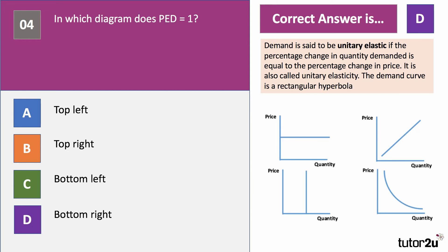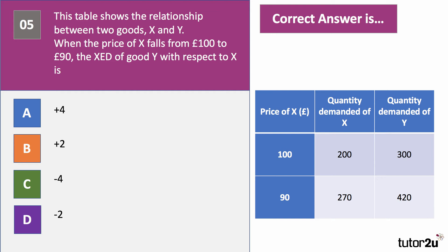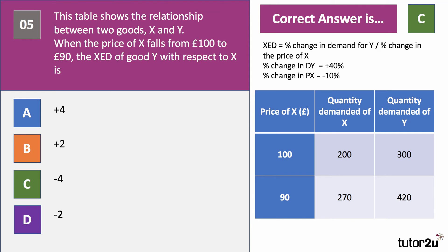Question five: the table shows the relationship between two goods X and Y. When the price of X falls from 100 to 90, what is the cross price elasticity of demand for good Y with respect to X? The right answer is C: minus four. Cross price elasticity (XED) is the percentage change in demand for Y caused by the percentage change in the price of X. There's been a 40% increase in demand for Y brought about by a 10% fall in the price of X — so plus 40 over minus 10 gives minus 4 — suggesting these two products are quite strong complements.